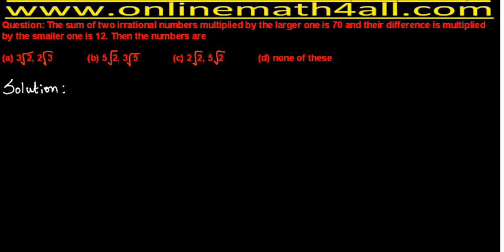We can check the given options to find the correct answer. We check whether the conditions in the question are satisfied by Option A. If satisfied, Option A is correct; if not, we check Option B or Option C. Whichever option satisfies the given conditions is the right answer. Let's first check whether Option A is correct.